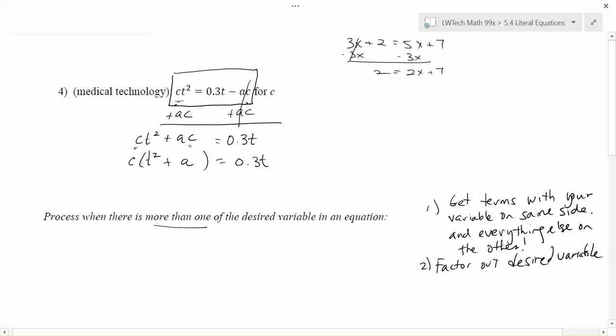This is great because now I've gone from having more than one C in the equation to now I only have a single C in the equation, which is the variable that I want to get alone. So now all I have to do is get rid of everything else that's on that same side of the equation.